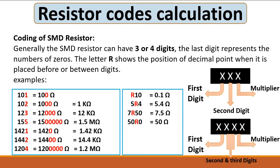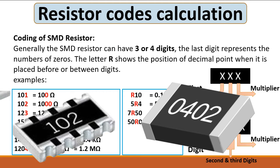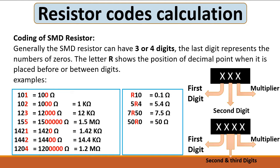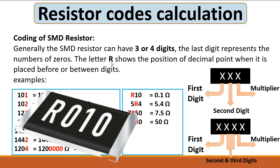In this video we're going to see the resistor codes calculation — specifically SMD resistor codes. Generally, an SMD resistor can have three or four digits. The last digit represents the number of zeros, or the multiplier. The letter R shows the position of the decimal point when it is placed before or between digits.